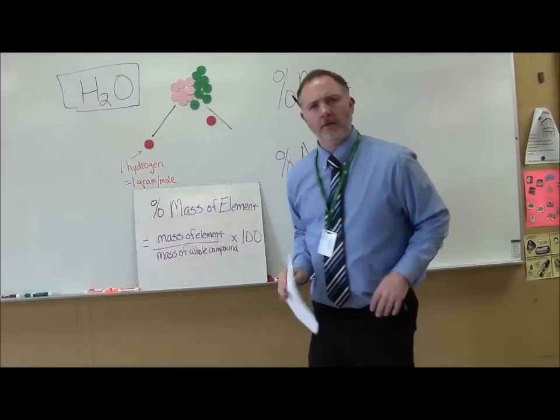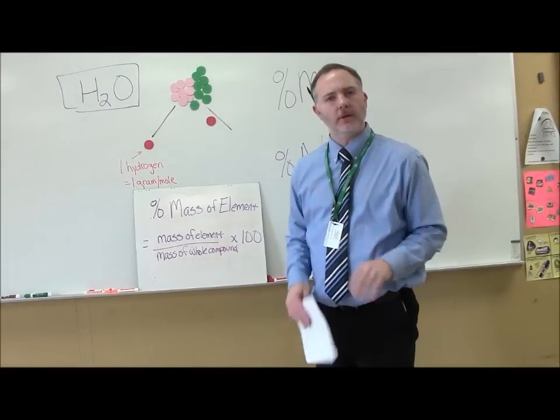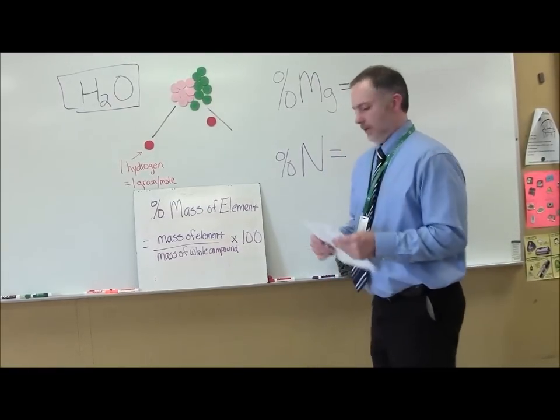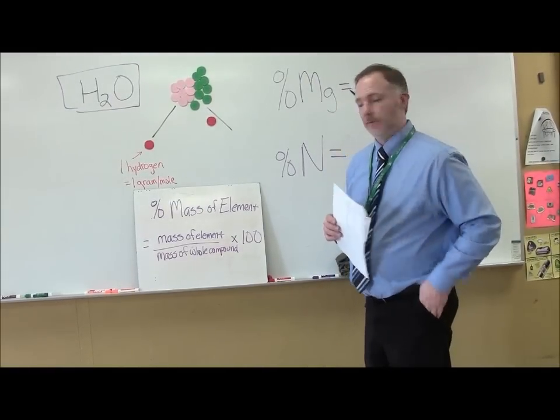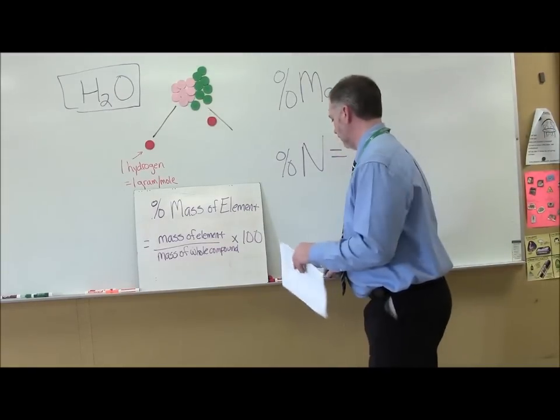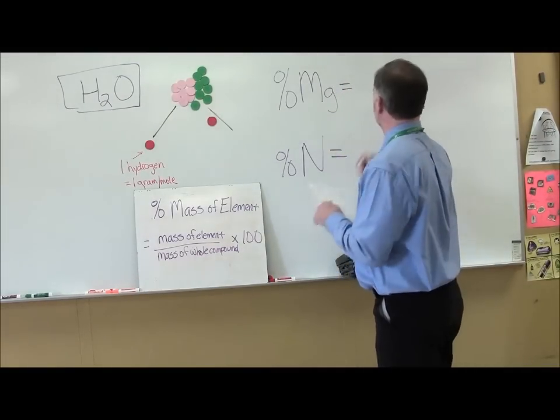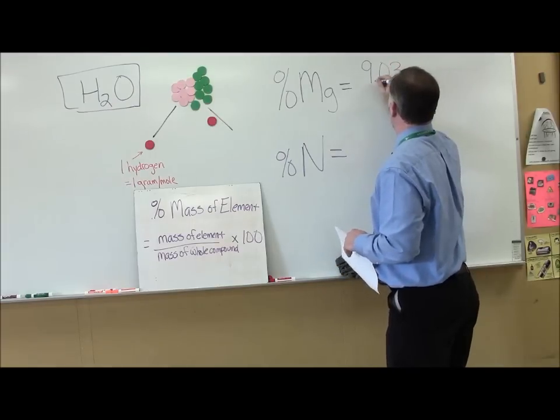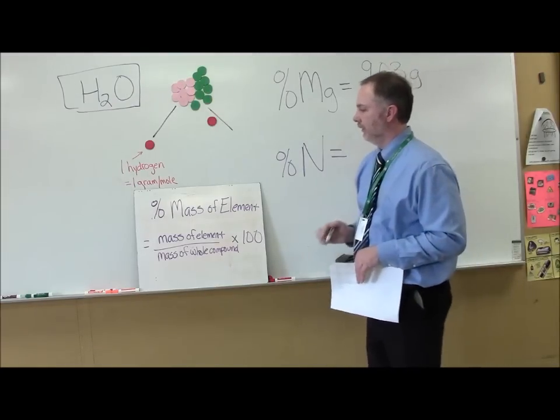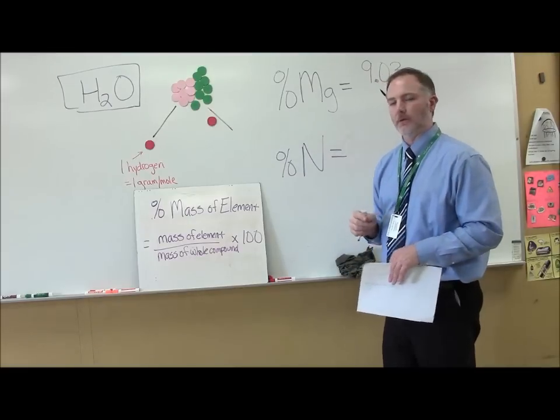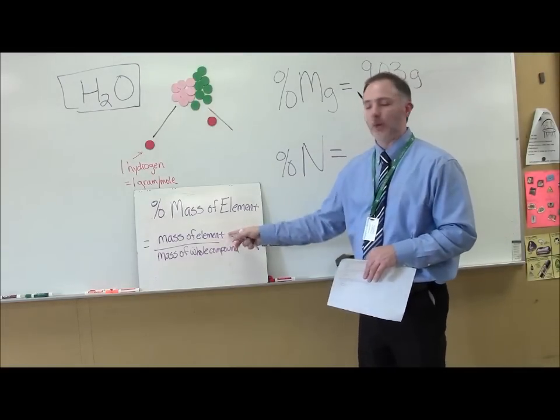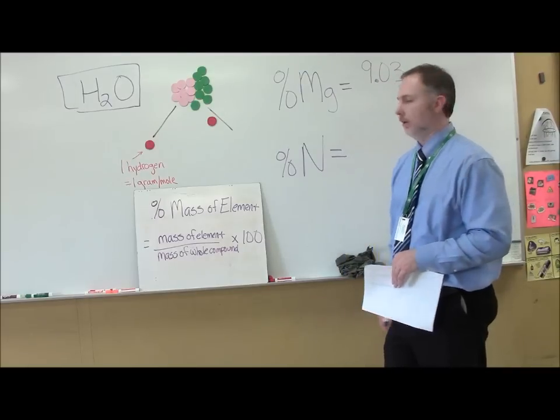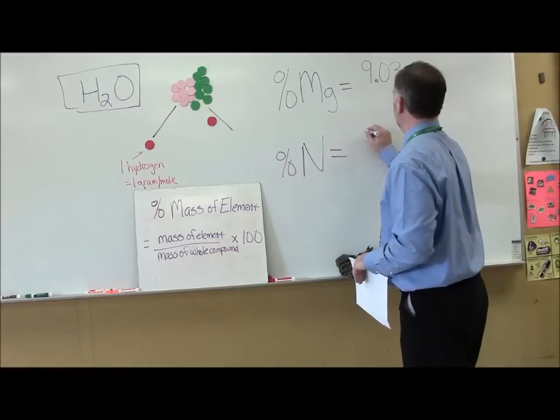Okay, sorry about that. I just realized I forgot to do the math for that problem, so I want to take a second and do it. So we got a compound that has 9.03 grams of magnesium. So our percent magnesium, we know right now, it has 9.03 grams. This time I don't have to look up the magnesium in the periodic table. The question told us what our mass was right in it. And it also told us our mass of our nitrogen there, which was 3.48 grams.